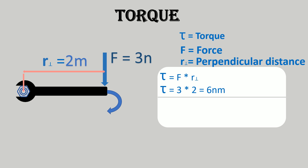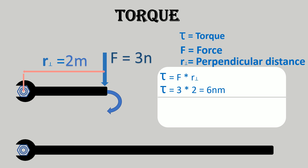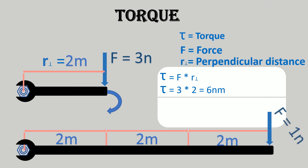To understand this better, let's discuss another example. Now we have another nut and screw. The length of our screw is 6 meters, and we apply 1 newton force at 6 meters from the axis. In this case, torque is equal to 1 times 6 — 6 newton meters. As you see, we have the same torque for these two different cases.